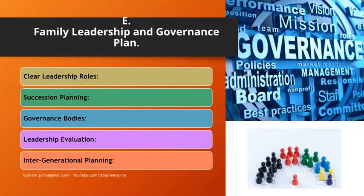Family leadership and governance plan. Clear leadership roles assign leadership responsibilities for smooth operations. Succession planning sets guidelines for identifying and preparing future leaders. Governance bodies establish family councils or boards for oversight. Leadership evaluation defines criteria to assess family members in leadership roles.